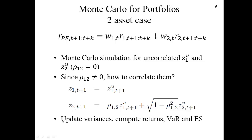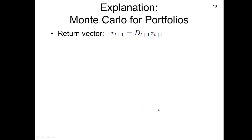Once we have z1 and z2, we update variances and compute new returns just like we did before. We keep doing that until time k, and then we obtain the VaR and Expected Shortfall once we have the t+k returns.